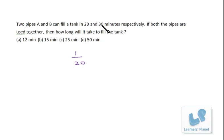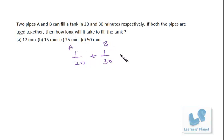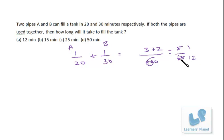Similarly, the other pipe can fill the tank in 30 minutes while working alone — that means 1/30th part will be filled up in 1 minute. Now if both of them are working simultaneously, per minute 1/12 part of the tank is being filled up. That means in all 12 minutes it will take to fill up the tank completely if both the pipes are working together.